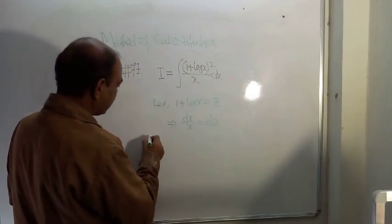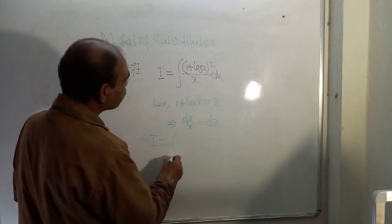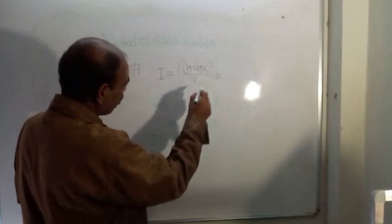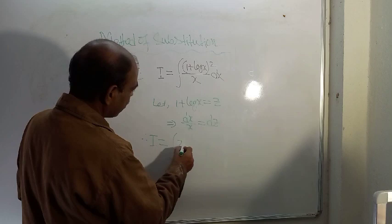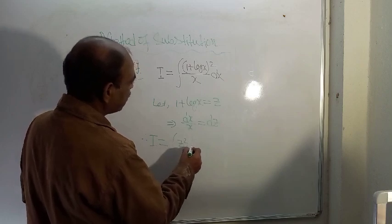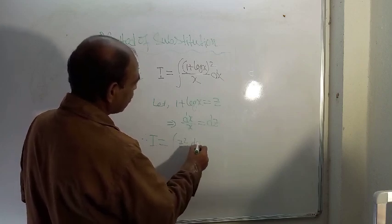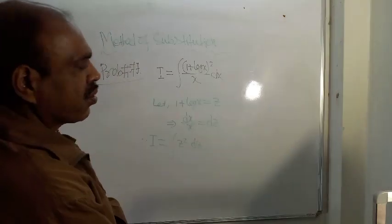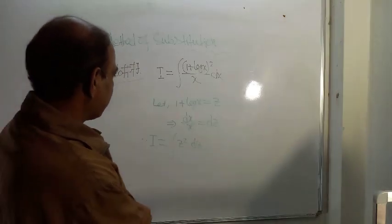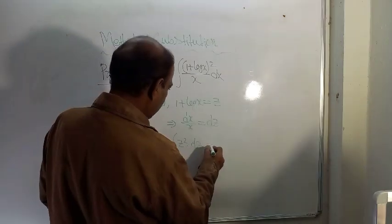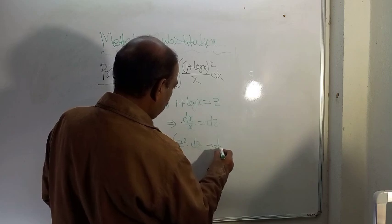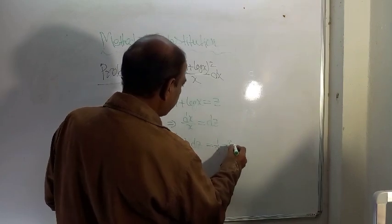Therefore integration: this is equal to 1 plus log x, so z square, dx by x is equal to dz. So here answer will be what? One third z cube plus c.